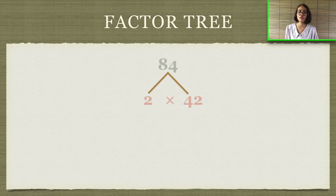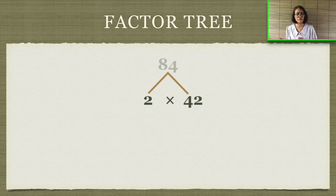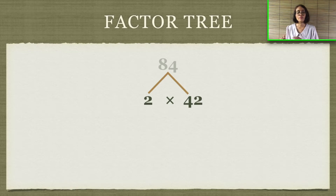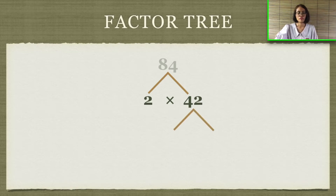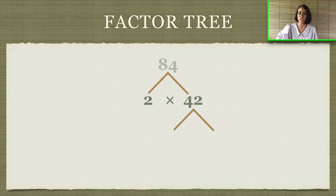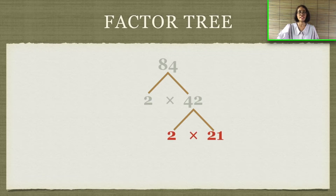2 is already a prime number, so let's go to 42. What are the prime factor numbers of 42? We can try to divide it by 2 — yes it can — so the answer is 2 times 21.